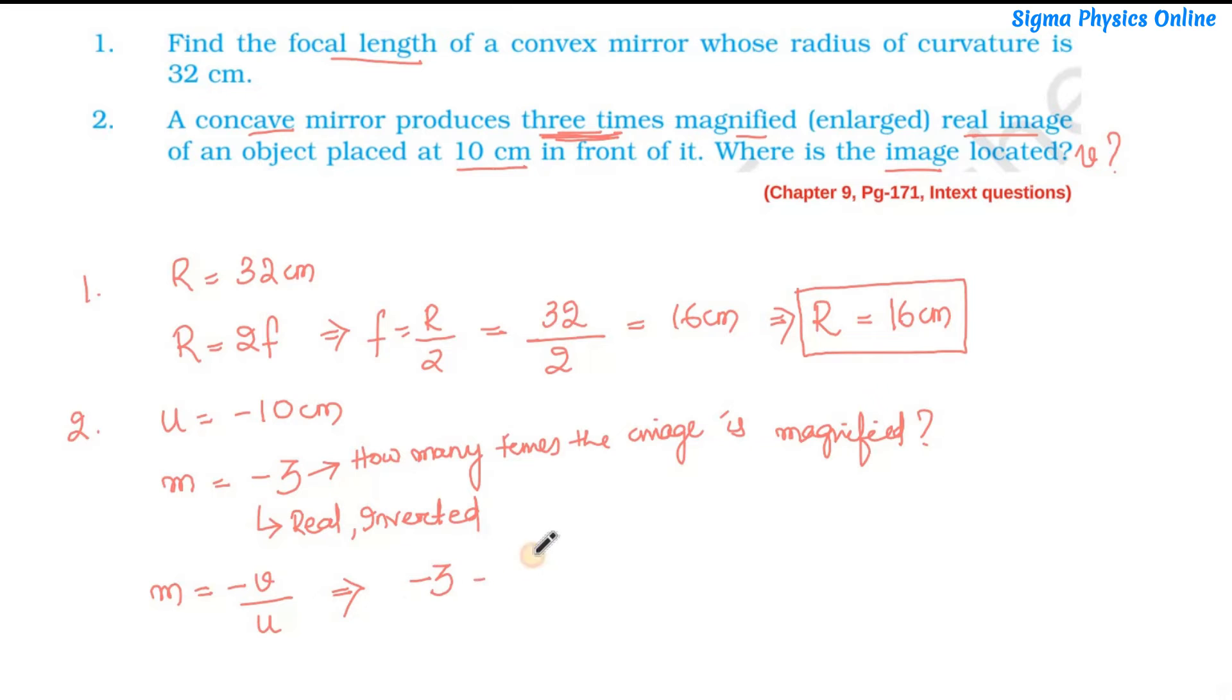So magnification is minus three. V we don't know. U is minus 10. So this minus cancels and our image distance is minus 30 centimeters.